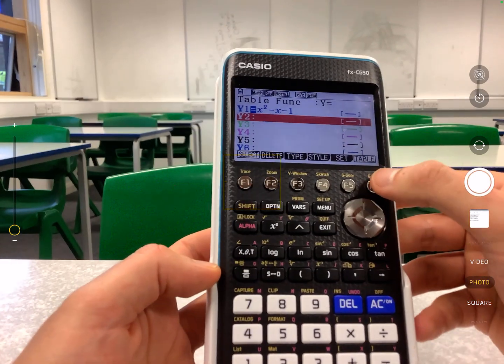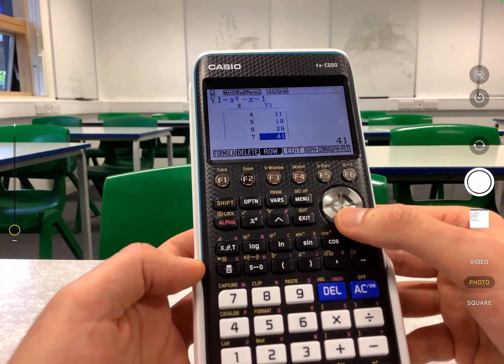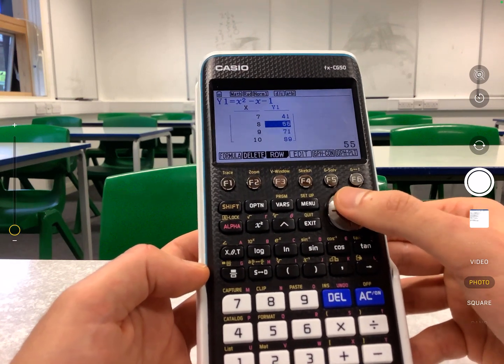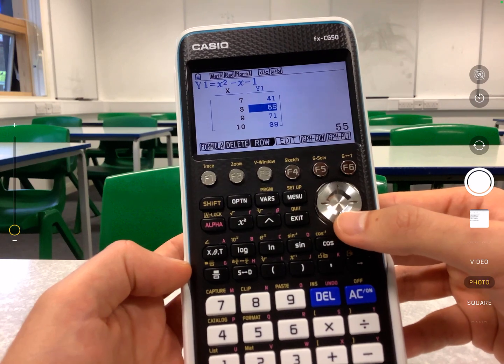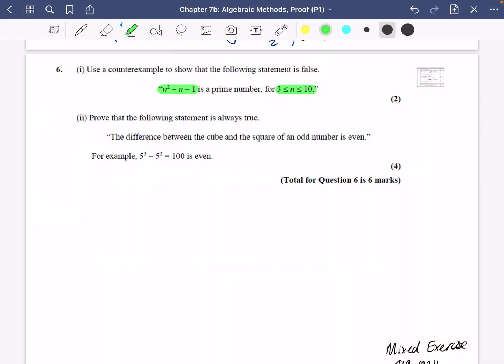You can then just look through the list when you get the table, and you can see that the outputs are 5, which is prime, 11 is prime, 19 is prime, 29 is prime, 41 is prime. Aha, 55 is not prime, and the rest all are. So when x or n is equal to 8, we have the answer 55, which is not prime, and so it is therefore a counterexample. So for that part one, we can say when n equals 8, n² - n - 1 equals 55, which is not prime. And that's it. We've used a counterexample. So the statement is false.